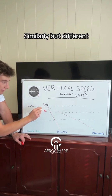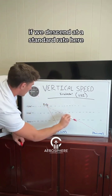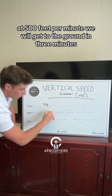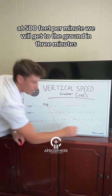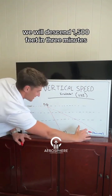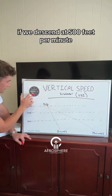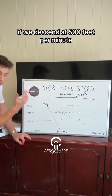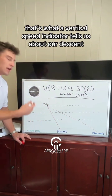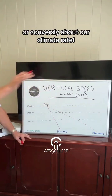Similarly, but different — if we descend at a standard rate of 500 feet per minute, we will get to the ground in three minutes. We will descend 1,500 feet in three minutes if we descend at 500 feet per minute. That's what our vertical speed indicator tells us about our descent or our climb rate.